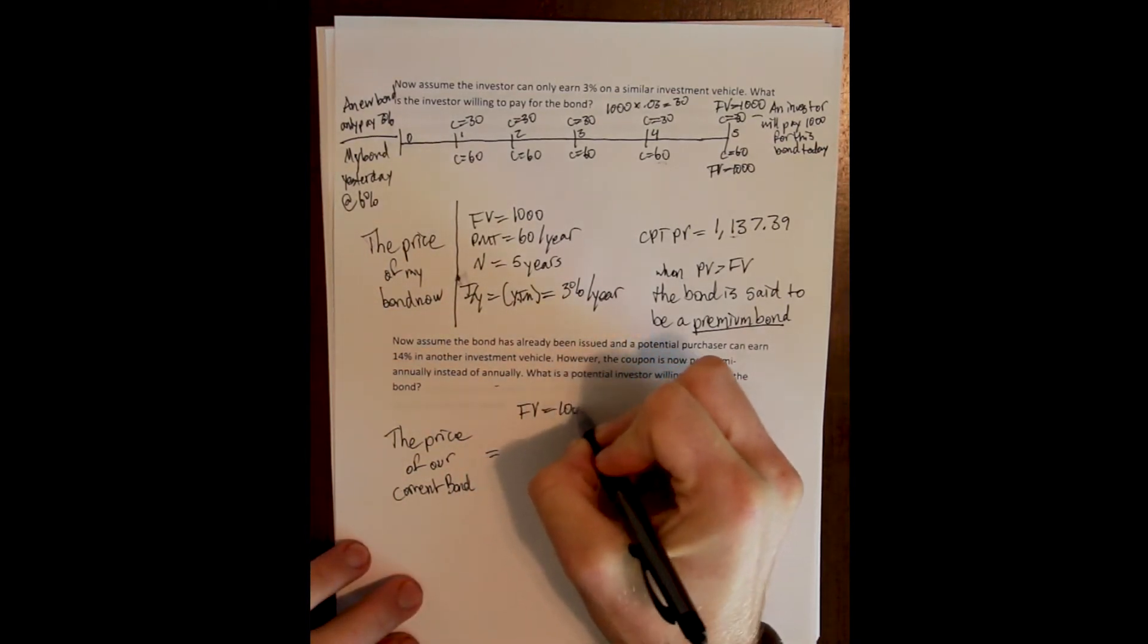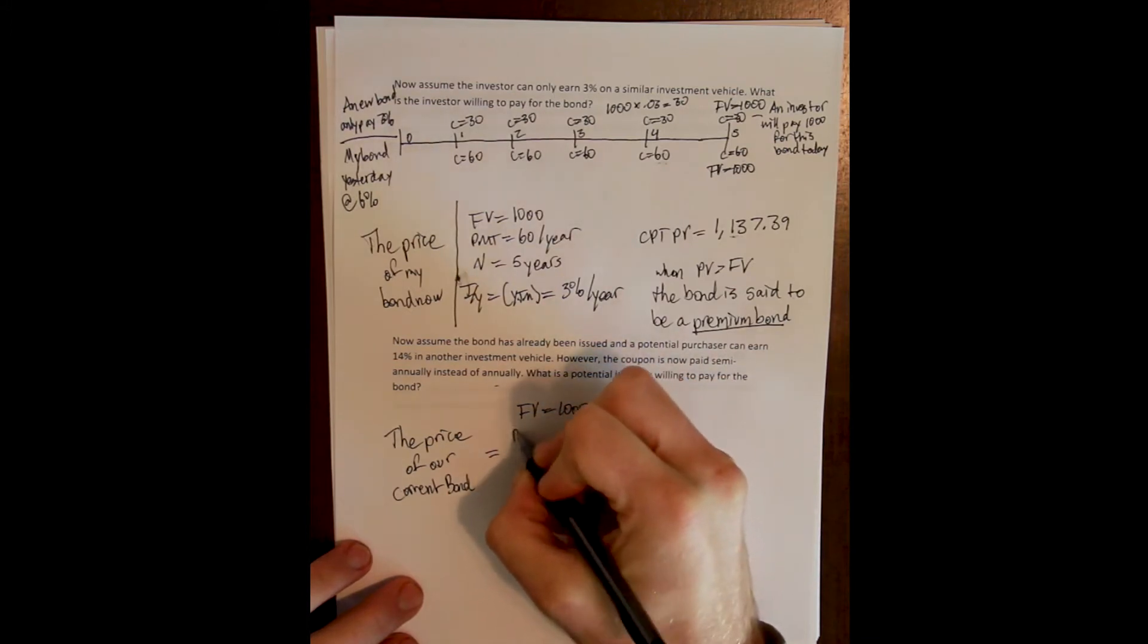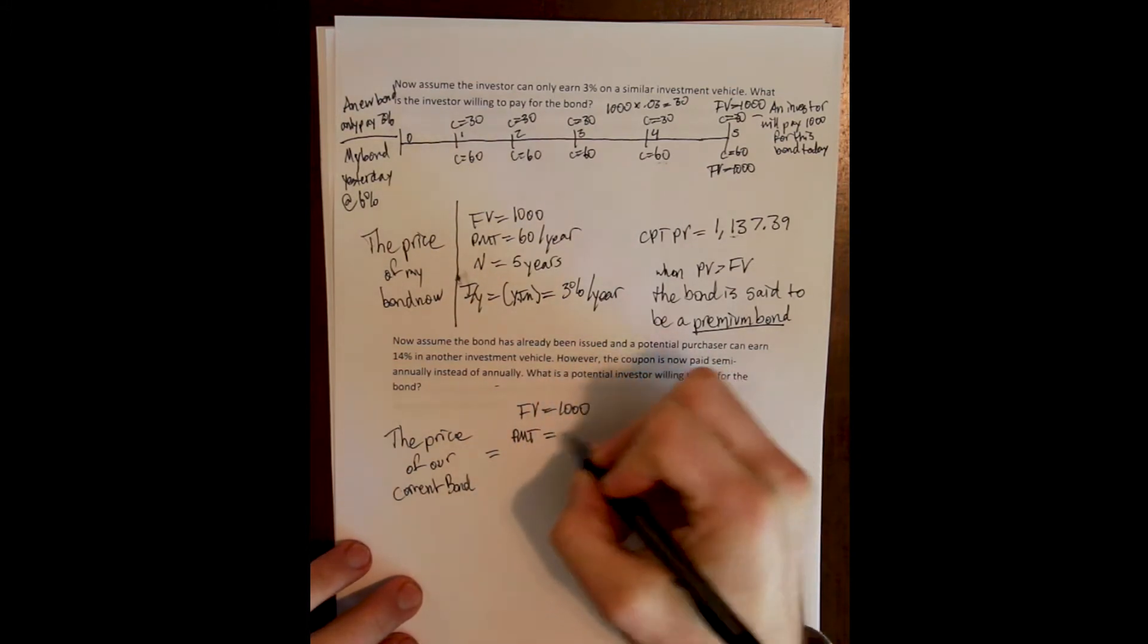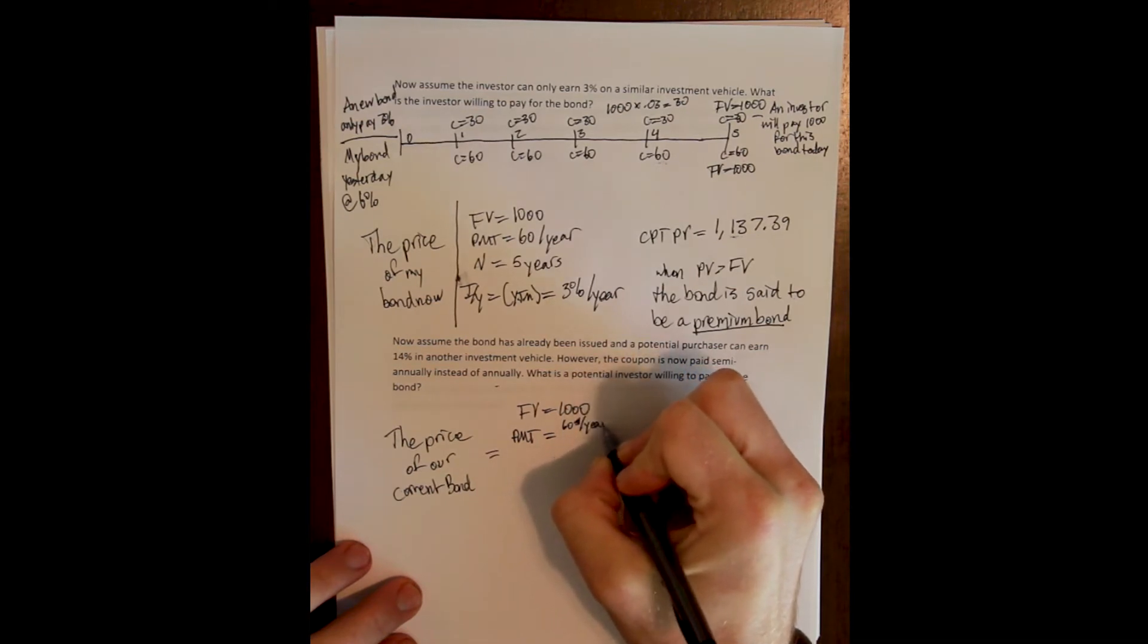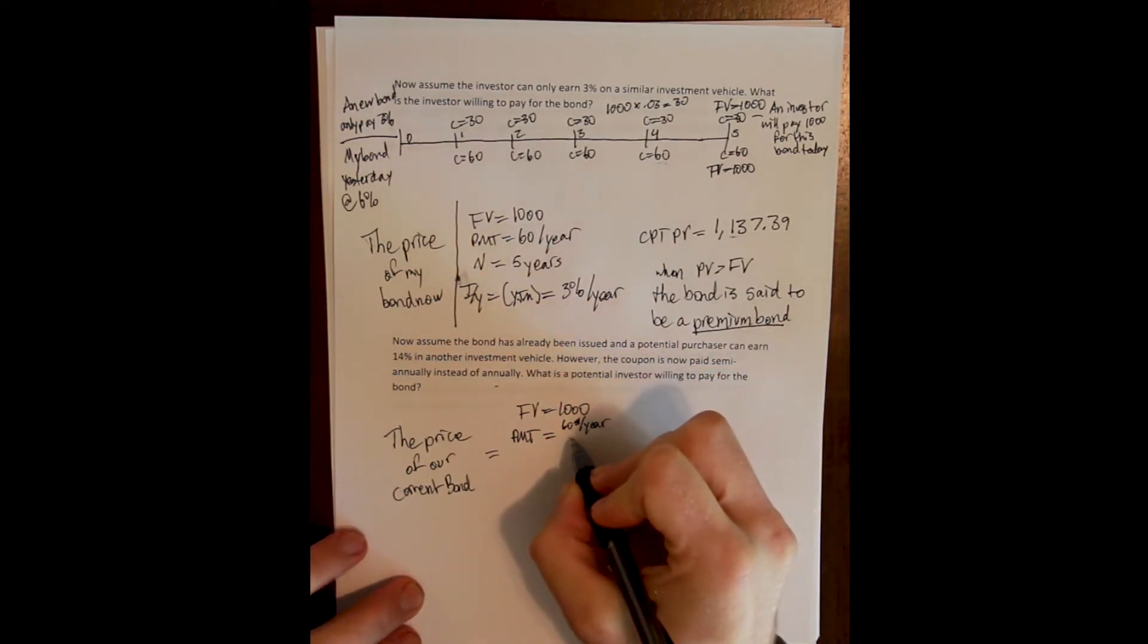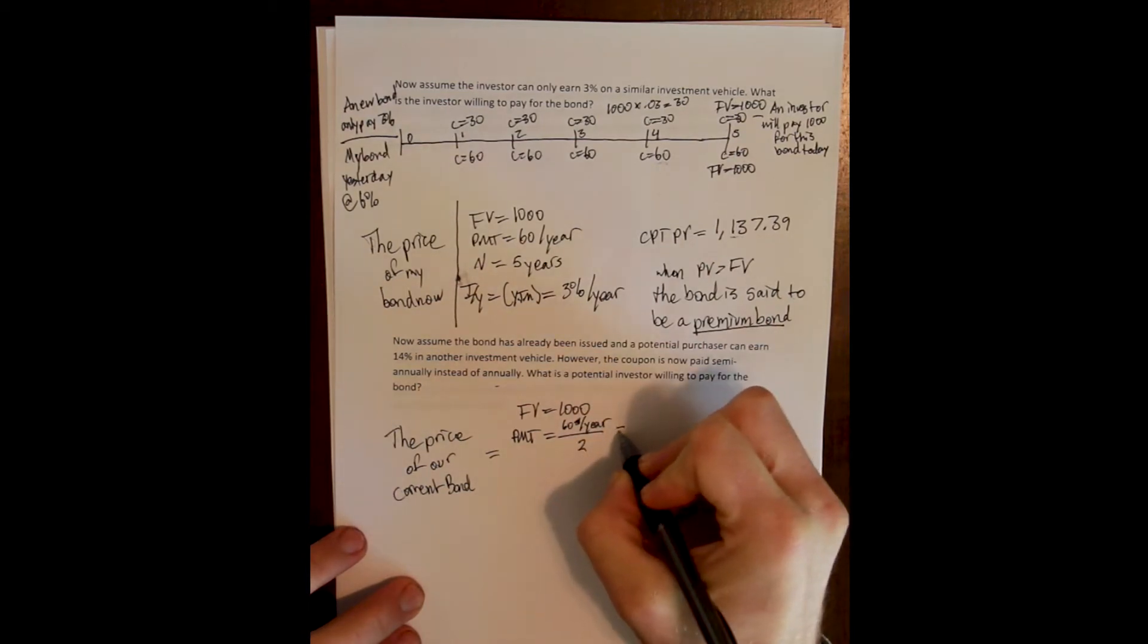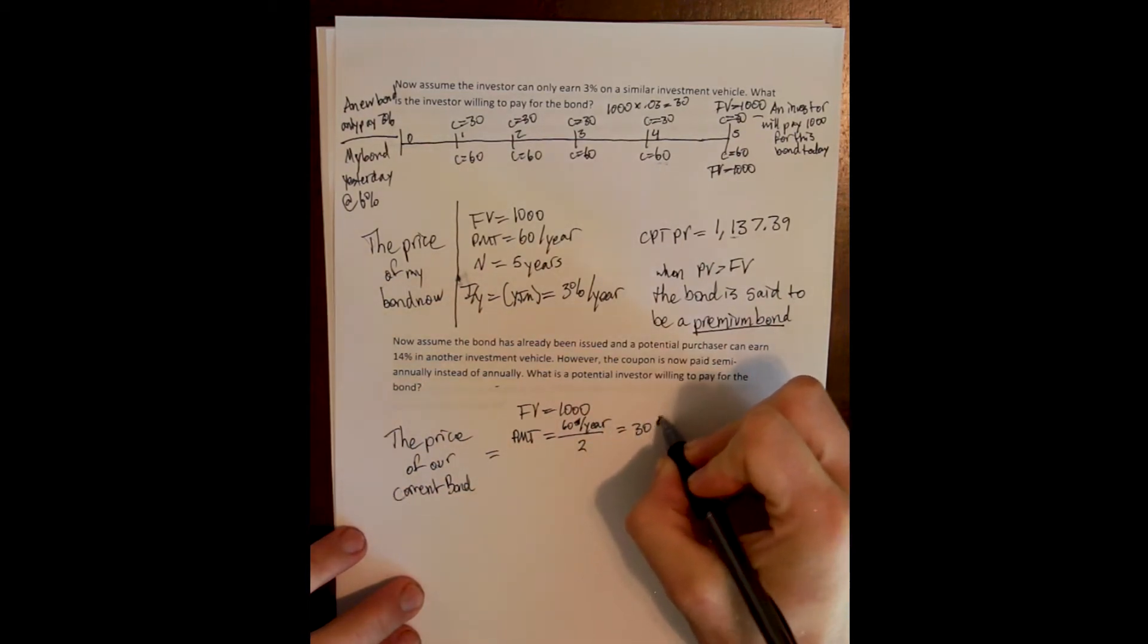All right, so I still have a face value of $1,000. And I still would have a $60 per year coupon, except I'm being paid this coupon now twice a year. So I need to divide that by two and I get $30 coupon every half year.